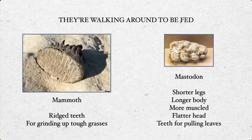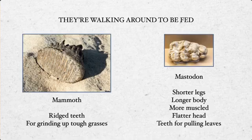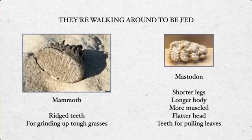Their teeth are obviously very famous. Mammoth teeth are classic, very ridged teeth — very easy to spot — and they're good at grinding up the tough grasses that mammoths ate. Mastodons typically had shorter legs and a longer body, but were more muscled. They had a flatter head, and their teeth were for pulling leaves, not grinding. That's why you see the distinctive shape of mastodon teeth.